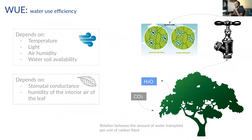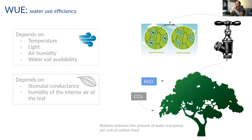Transpiration is a physiological phenomenon where plants need to take CO2 from the air. They have these structures on their leaves called stomata, and when they need to take CO2 from the air, they open the stomata so they can capture the molecule of CO2.